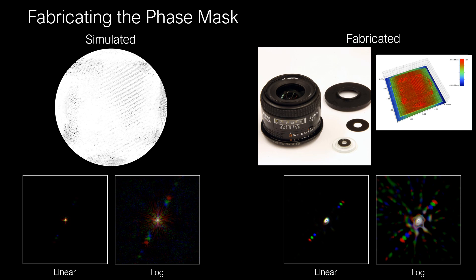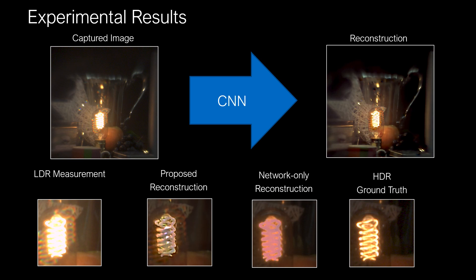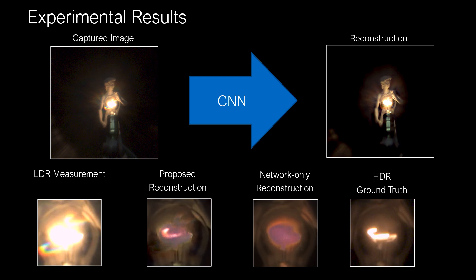We fabricate the optimized lens using grayscale lithography and mount it as an add-on on a conventional camera lens. The simulated and captured PSFs are very similar. We captured several high-contrast scenes with our prototype. The PSF of our system creates copies of the bright, saturated details, which are then recovered with the network. In contrast, the CNN-only approach is forced to fill in missing regions with blob-like structures, as it has no information about the overexposed areas and can only hallucinate a plausible guess.